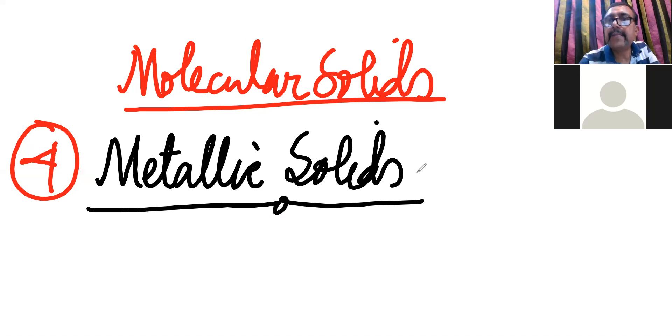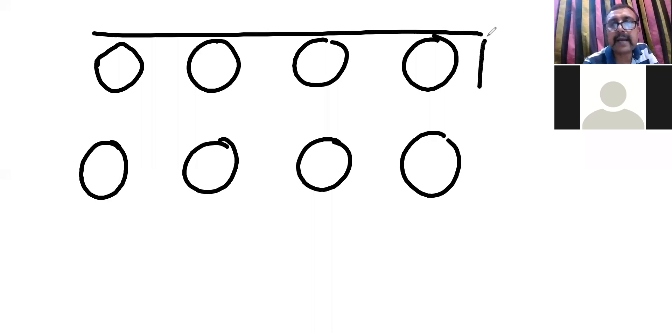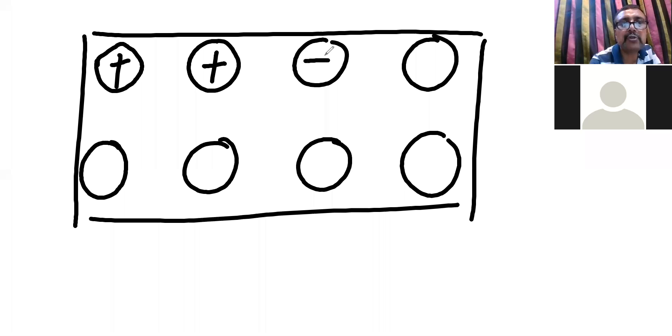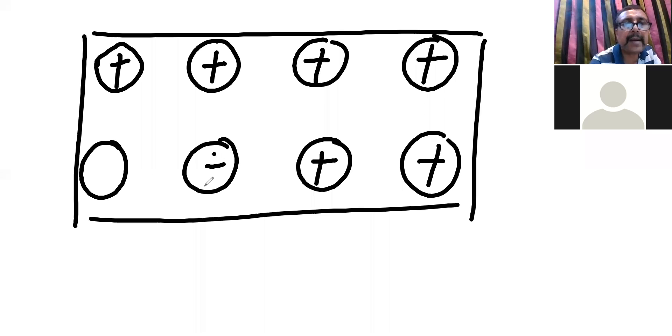Listen carefully. First I will explain the metallic bond in metals. The constituent particle of a metal is a metal ion. There is a theory called the electron gas model theory. Based on this, if a metal has particles and they have the tendency to lose electrons, they become positively charged.